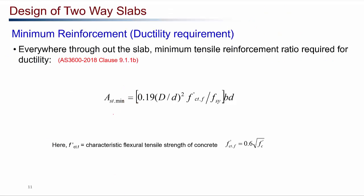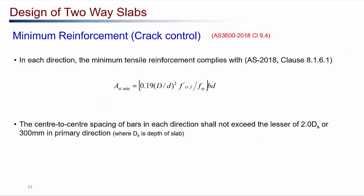Throughout the slab, we must provide at least the minimum tensile reinforcement according to clause 9.1.1.1b for ductility, so that the slab does not experience brittle failure. The reinforcement calculated from bending moment requirements in both x and y directions, both positive and negative moments, must be at least greater than AST minimum given by that equation. From the crack control perspective, minimum reinforcement per clause 8.1.6.1 must be provided in all directions. Also, the center-to-center spacing of bars must not exceed two times the depth of the slab or 300 mm in both x and y directions.